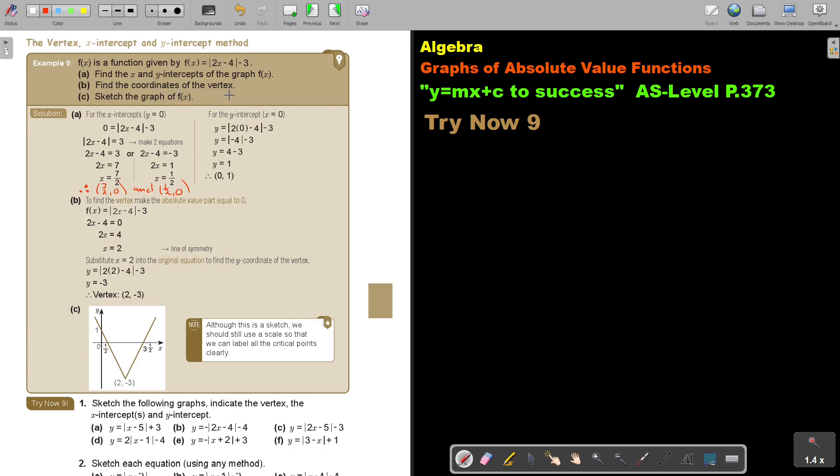Find the coordinate of the vertex. Now, to find the vertex, make the absolute value part equal to 0. That part in between the bars, make it equal to 0. So x is equal to 2. It's the line of symmetry. And then, you substitute that value into the original equation to find the y coordinate of the vertex. So, you substitute to get negative 3, and there is your vertex. And now you just plot. You plot your vertex, you plot your x-intercepts, you plot your y-intercepts, and there is the graph.